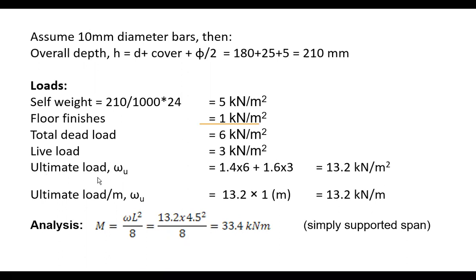The total ultimate load = 1.4 × dead load + 1.6 × live load = 1.4 × 6 + 1.6 × 3 = 13.2 kN/m². This is typically between 10 and 20 kN/m². Because we take a one-meter strip, this value is also 13.2 kN/m — used as kN per meter for beam-strip analysis.